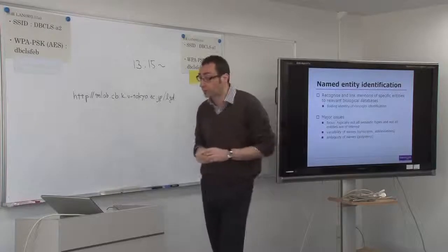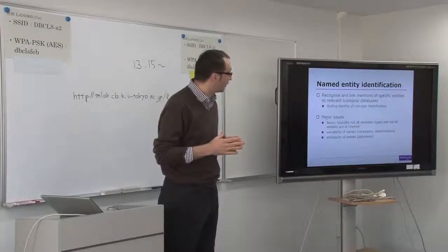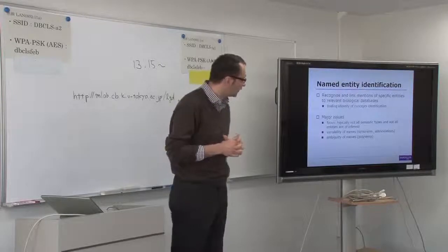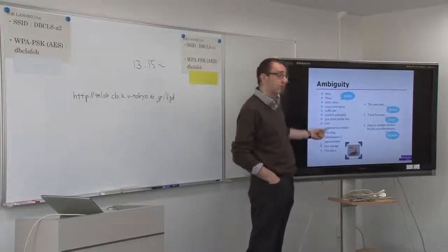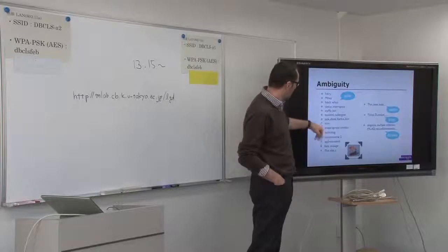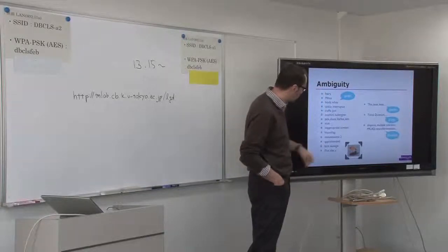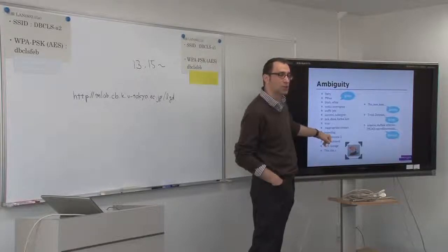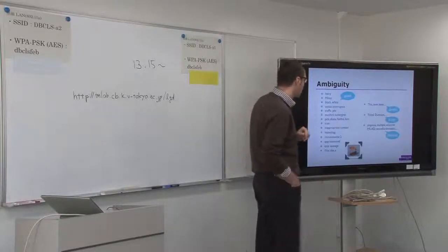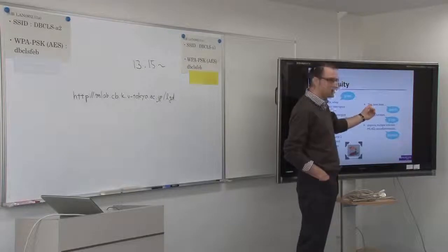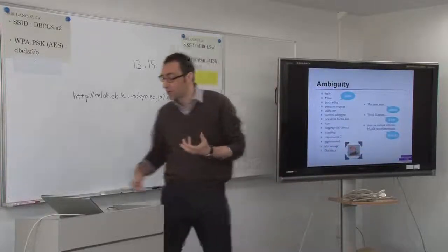Traditional text processing problems include variability of names — there are a lot of synonyms for the same concept. The other problem, probably more difficult to deal with, is ambiguity of names or polysemy. For example, gene names that appear in the literature include things like 'Hairy', 'Tactic Jam', and so on. Imagine how many of these you have in literature where you then need to determine: is this actually a gene name or not? Similarly, species names can be 'laser' or 'beta' and so on. Dealing with this stuff is really difficult.